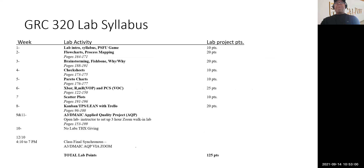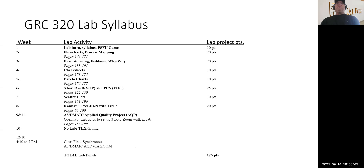Here's a quick synopsis of what we're doing this quarter. There are 11 weeks. Week one is the lab intro — that's today's assignment, worth 10 points. Week two covers flowcharts and process mapping, 20 points. Week three is brainstorming, fishbone, and why-why, 20 points. Week four is check sheets, 10 points. Week five is Pareto charts, 10 points. Week six is X-bar and moving range charts, 25 points. Week seven is scatter plots, 10 points. Week eight is a Kanban TPS lane where you create your own Trello board, 20 points.